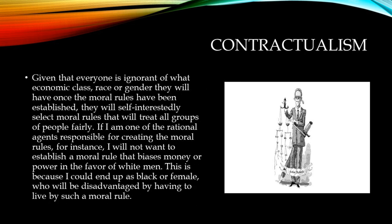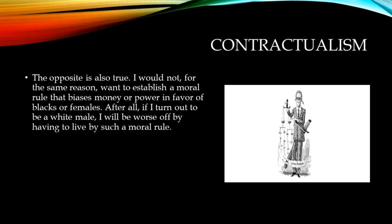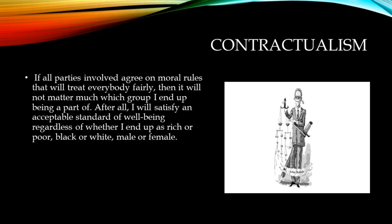Once the moral rules are established, everyone will have to live by them. Given that everyone is ignorant of what economic class, race, or gender they will have, they will self-interestedly select moral rules that will treat all groups of people fairly. If I am one of the rational agents responsible for creating the moral rules, I will not want to establish a moral rule that biases money or power in the favor of white men, because I could end up as black or female who will be disadvantaged by such a rule. The opposite is also true — I would not want to establish a moral rule biasing power in favor of blacks or females, since if I turn out to be a white male, I will be worse off. If all parties agree on moral rules that treat everybody fairly, it will not matter much which group I end up being a part of.